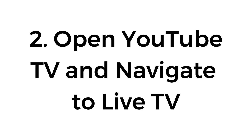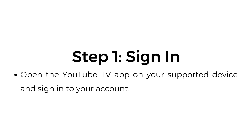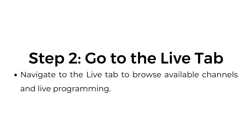Number two, open YouTube TV and navigate to live TV. Step one, sign in: open the YouTube TV app on your supported device and sign into your account. Step two, go to the live tab: navigate to the live tab to browse available channels and live programming.